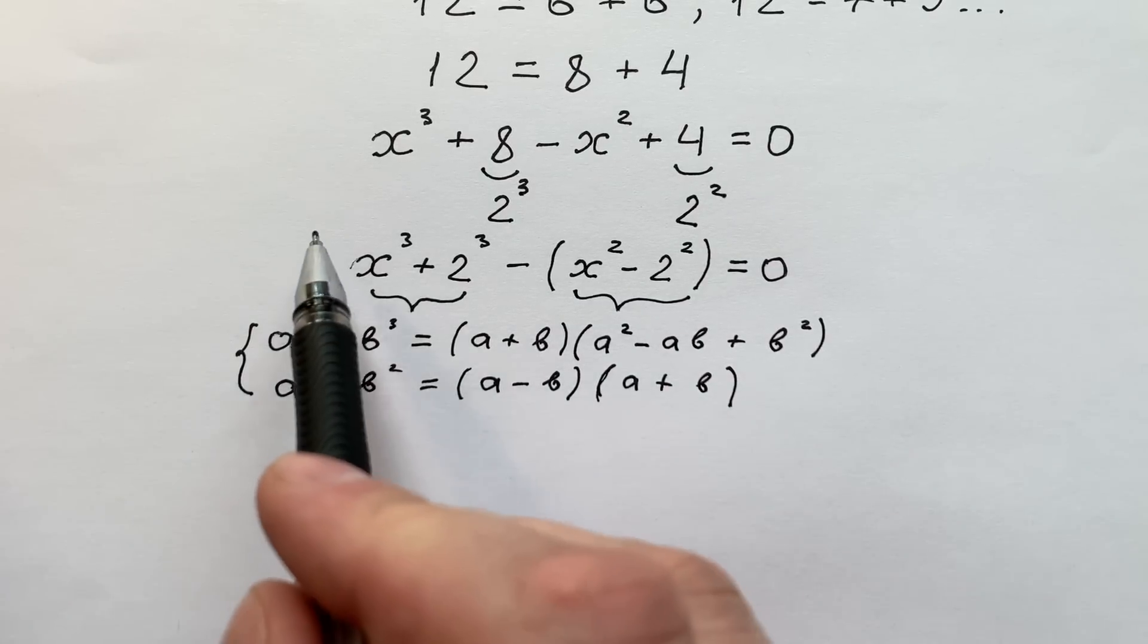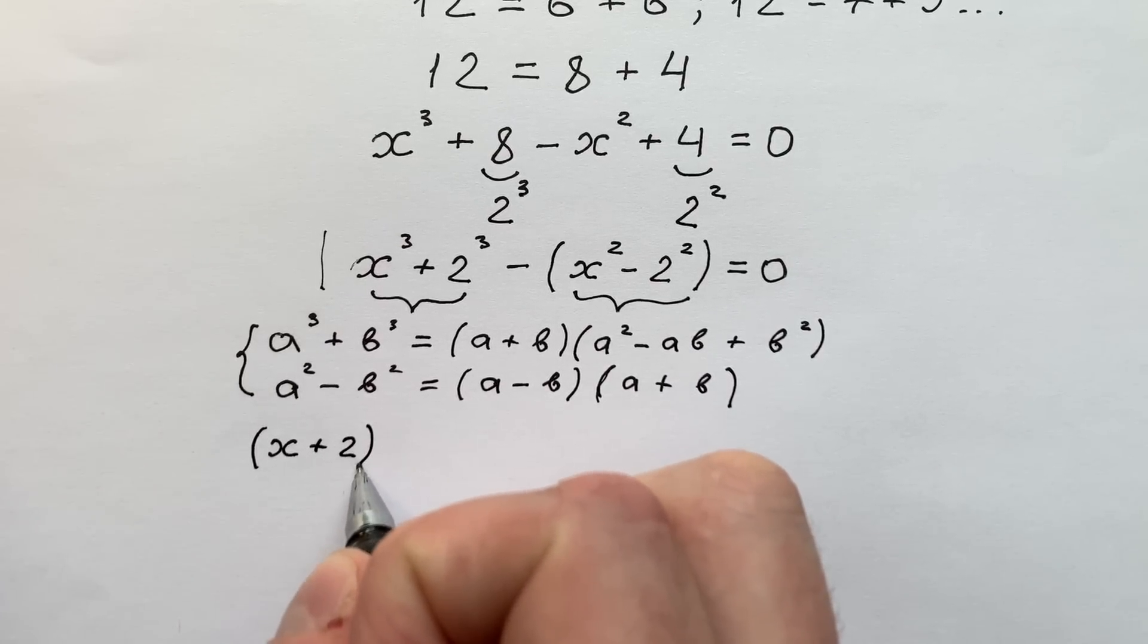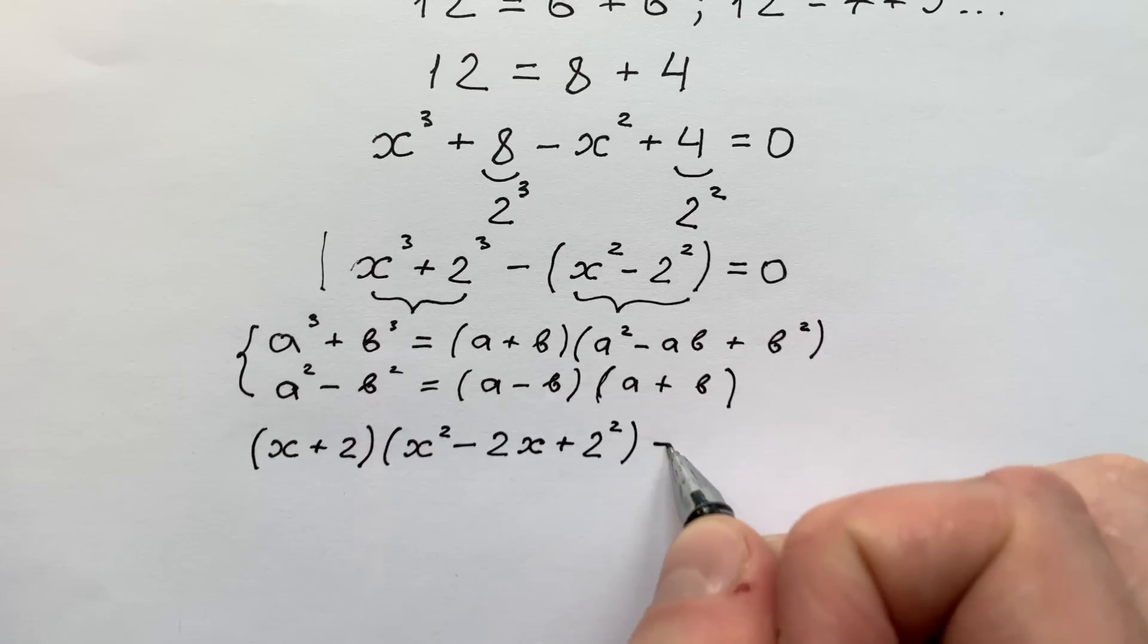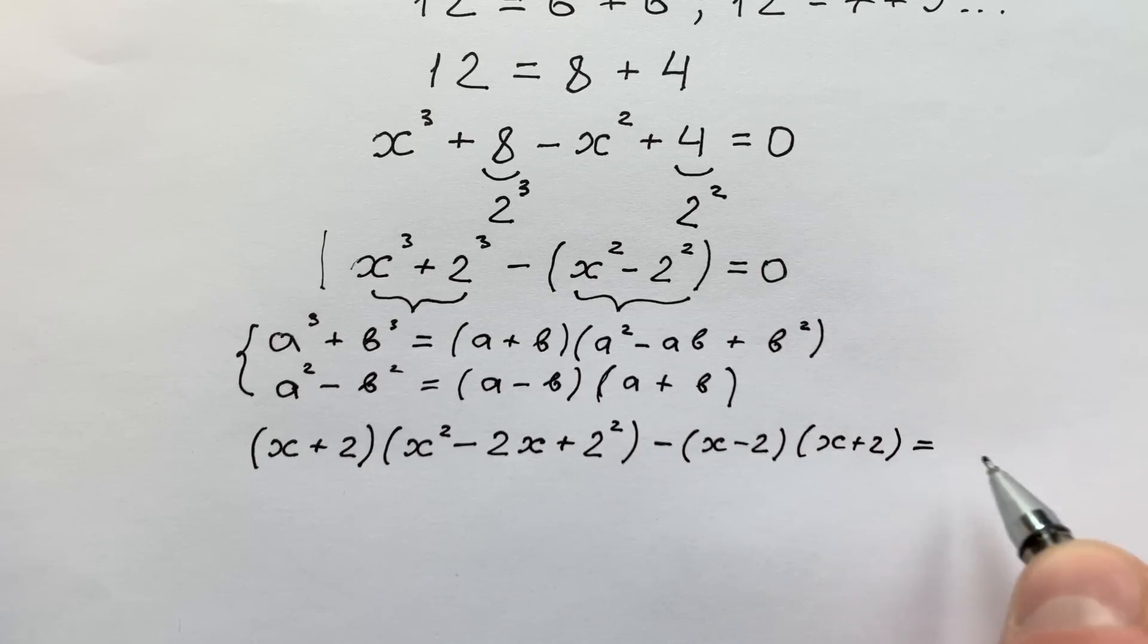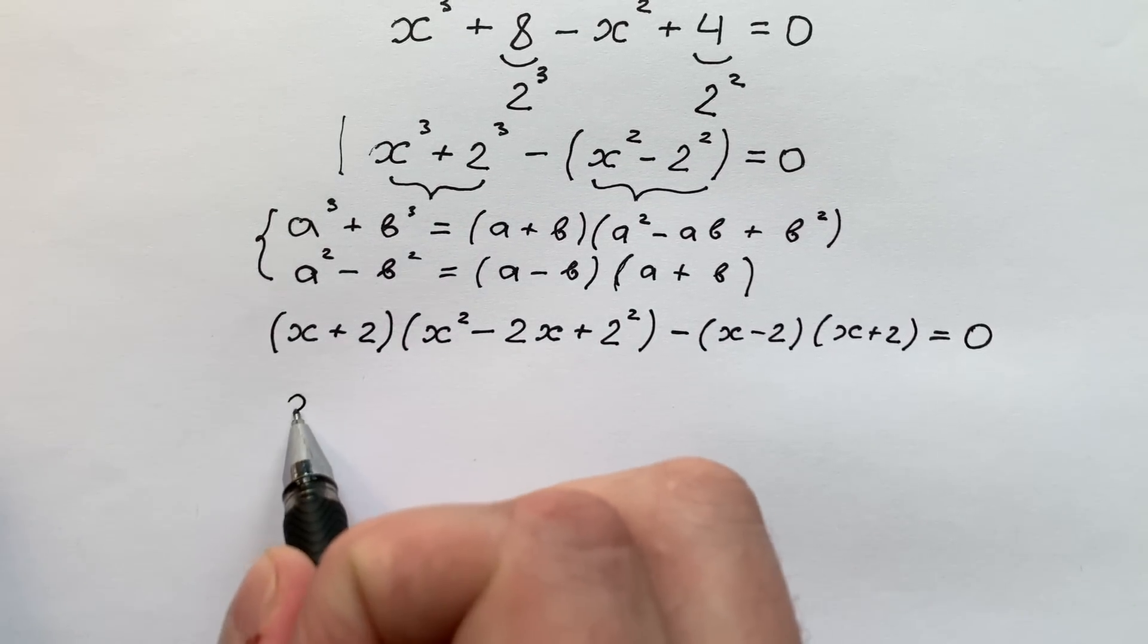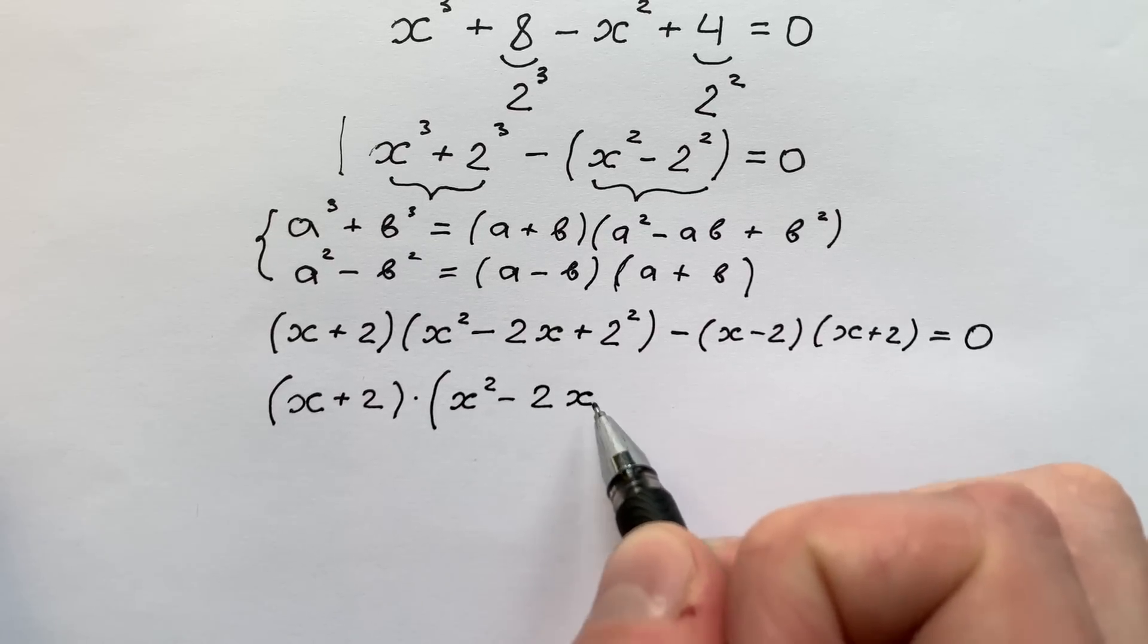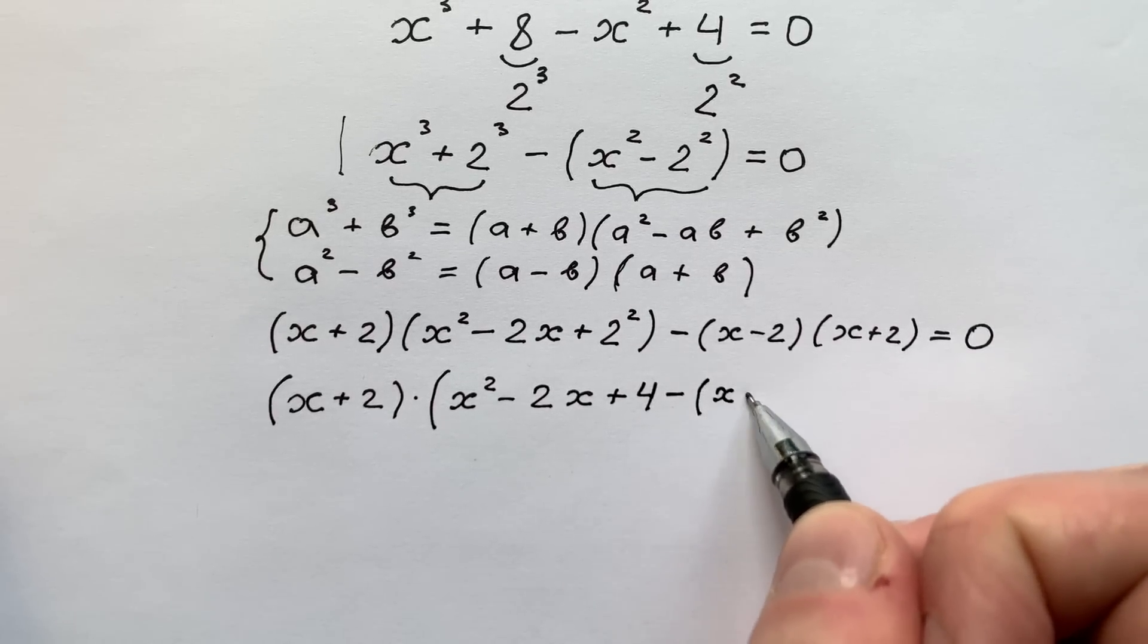Using these two formulas we can write our equation like x plus 2 times x squared minus 2 times x plus 2 to the power of 2 minus x minus 2 times x plus 2, and it equals to zero. Let's put x plus 2 out of brackets. Then we have x plus 2 in brackets times x squared minus 2 times x plus 4 minus x minus 2 in bracket, and it equals to zero.